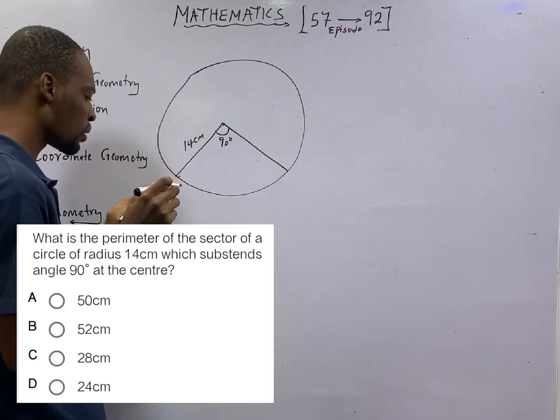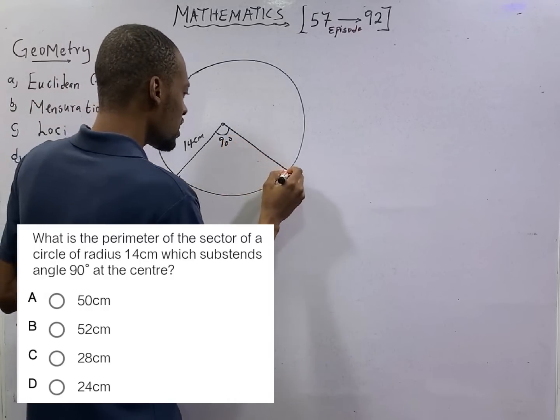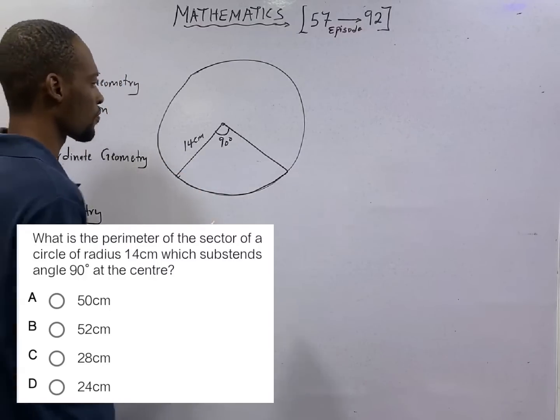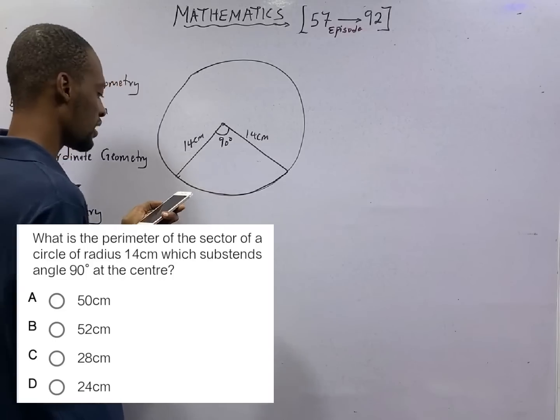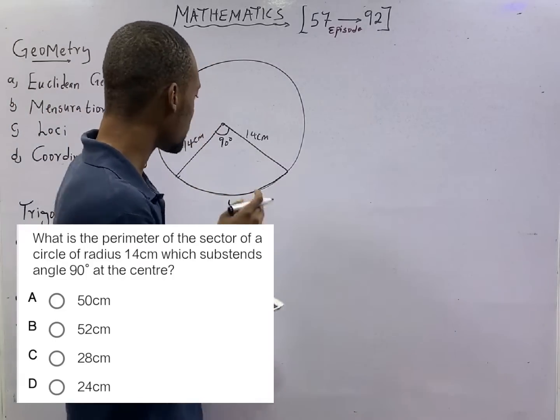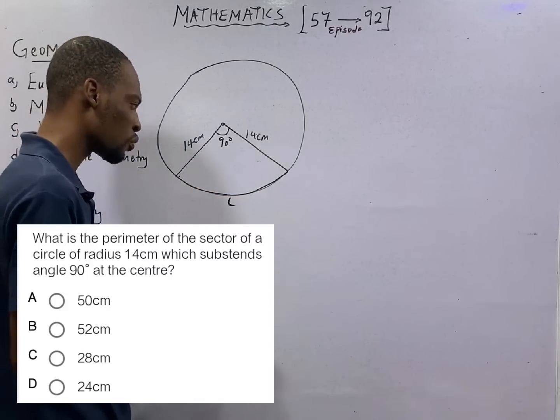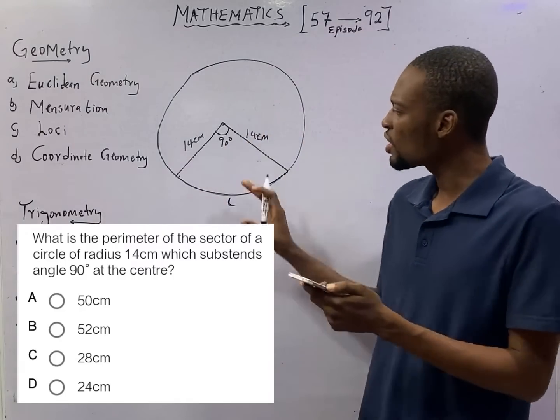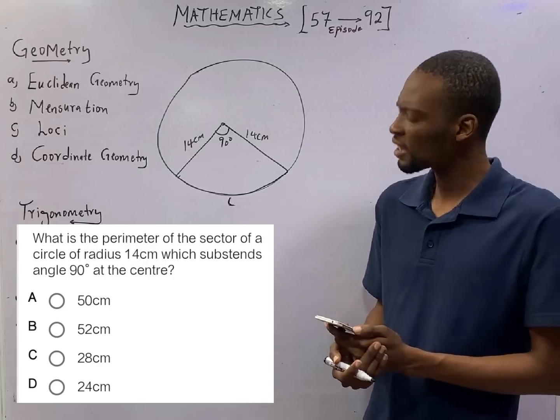So what we are looking for is the perimeter of the sector which is here. This is also 14 cm. And here, L that we need to look for. This is the arc. So we need to find the length of arc as well. What formula do we need? Or when you see a question like this, to look for perimeter of a sector, what do you do?